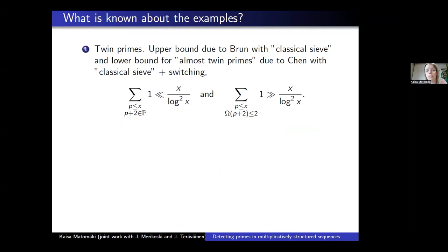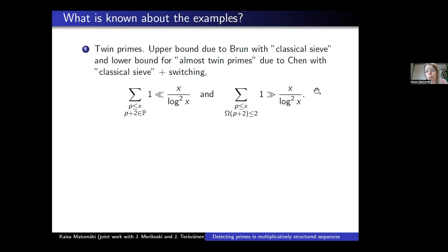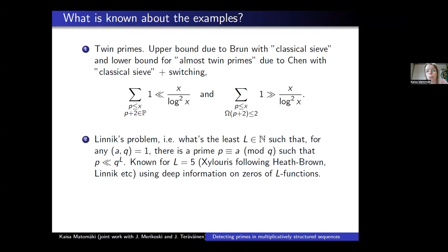What's known about these examples? For twin primes, there is an upper bound due to Brun of the expected order of magnitude: the number of twin primes up to x is at most a constant times x over log squared x. On the other hand, we have a lower bound for almost-twin primes — primes p such that p plus 2 has at most two prime factors — of size x over log squared x. This is due to Chen using a classical sieve plus a switching trick. For the Linnik problem, asking for the least L such that for any coprime a and q there exists a prime p which is a mod q of size at most q to the L, this is known for L equals 5 due to work of Xylouris.